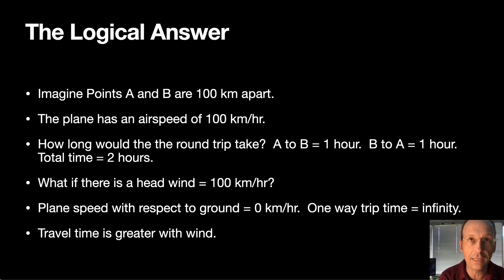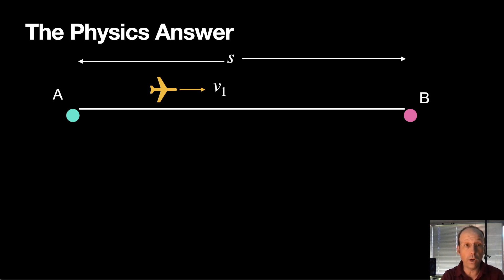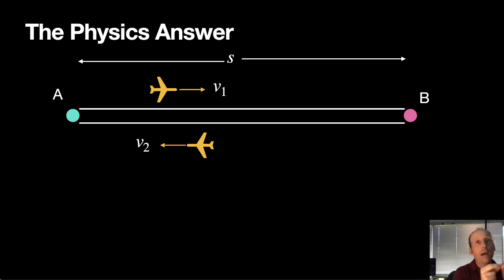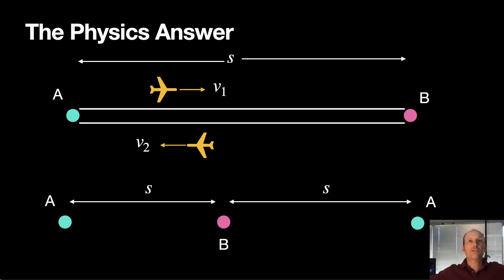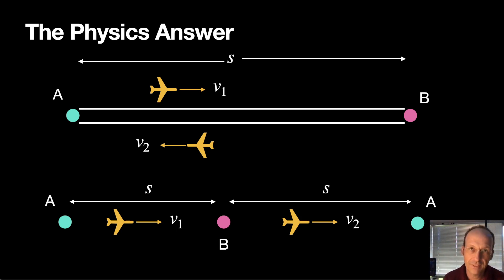Let's do this with some physics and math. Here's a picture: A to B, with distance S. On the way to point B it has velocity V1, on the way back velocity V2. To make the math a bit simpler, instead of going there and back, I'll stretch it out: go A to B at distance S with velocity V1, then keep going B to A at distance S with velocity V2. So it's two equal pieces with different velocities — and that's the same thing as turning around and going back.